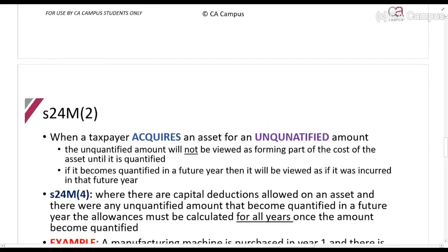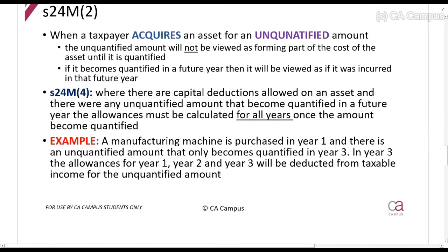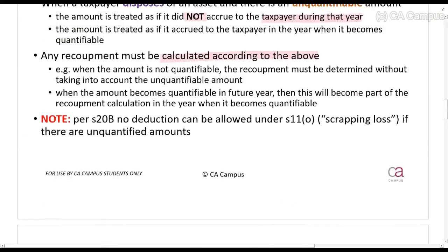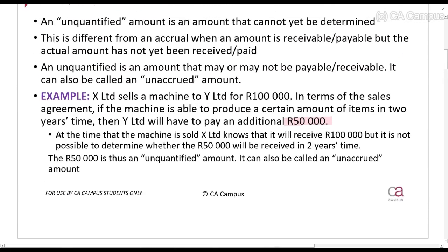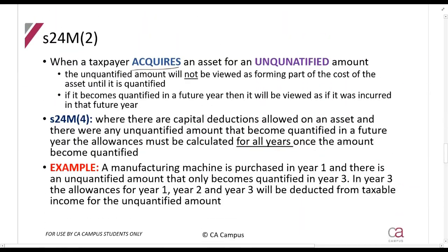Section 24M(2) deals with when we buy an asset. Taking the same example: X Limited sells the machine to Y Limited for R100,000, and Y Limited has two years before they know whether they must pay the R50,000. For Y Limited as the buyer, the problem is they don't know how much the machine cost them — did it cost R100,000 or R150,000? They'll only know when that amount becomes quantifiable. So how do we treat capital allowances in that case?